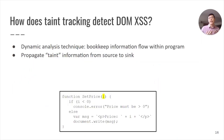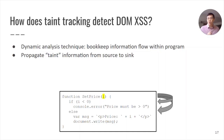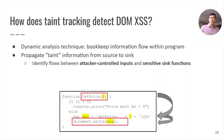How does taint tracking detect DOMXSS? This is done by bookkeeping the information flow within a program as it's being executed, and propagating taint information from defined sources to sinks. In this function, an input passes through both control logic, as well as variable manipulation and addition, before ultimately being sent to a sensitive sink function, document.write. When a flow exists between an attacker-controlled input and a sensitive sink function, this indicates the potential possibility of a DOMXSS vulnerability.